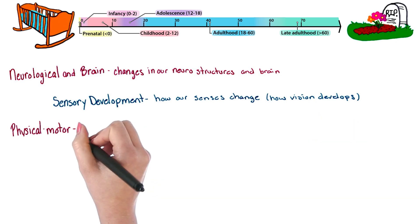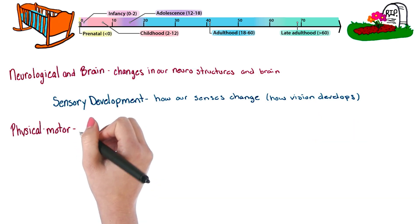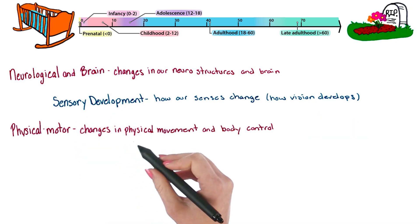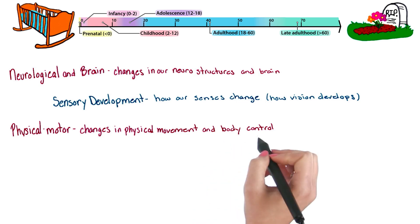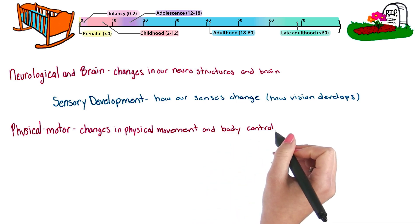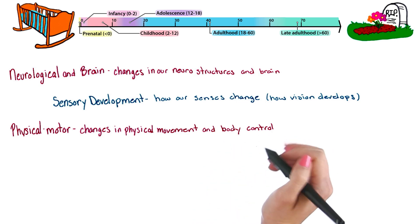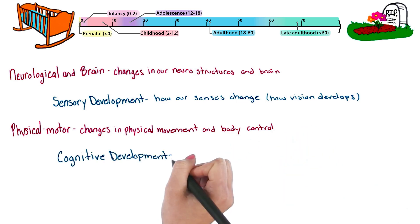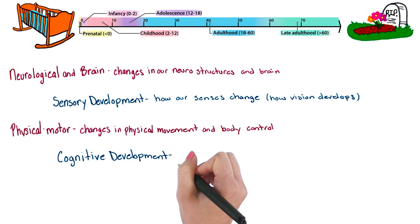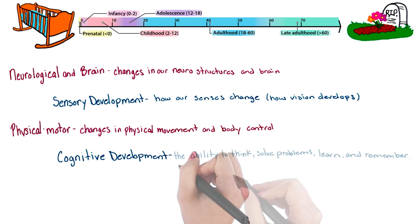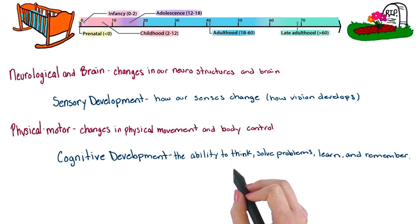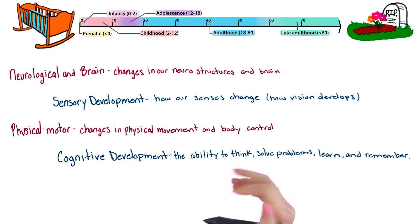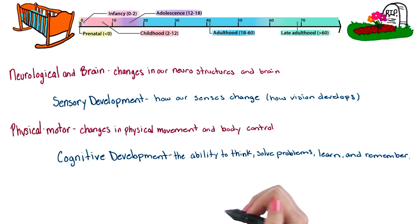We also look at our physical and motor development. This looks at the development of our physical movement and body control — for example, when you learn to crawl or walk. We also look at our cognitive development, which focuses on our ability to think, solve problems, learn new things, and remember things.